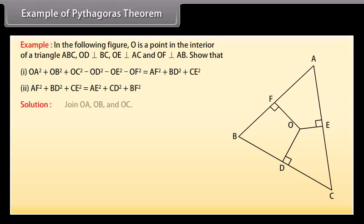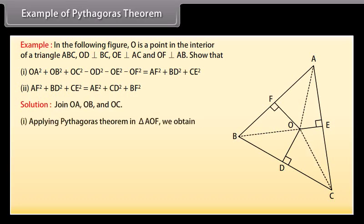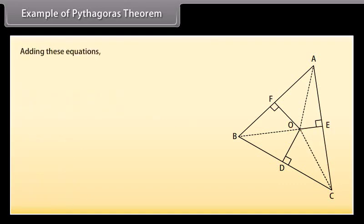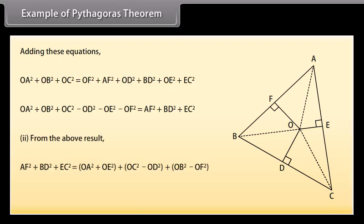Solution: Join OA, OB, and OC. Part 1: Applying the Pythagoras theorem in triangle AOF, OA² = OF² + AF². In triangle BOD, OB² = OD² + BD². In triangle COE, OC² = OE² + EC². Adding these equations gives OA² + OB² + OC² - OD² - OE² - OF² = AF² + BD² + CE². Part 2: From this result, AF² + BD² + CE² = AE² + CD² + BF².